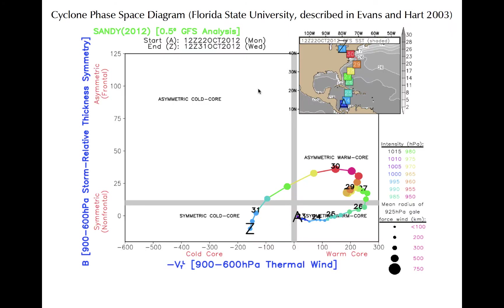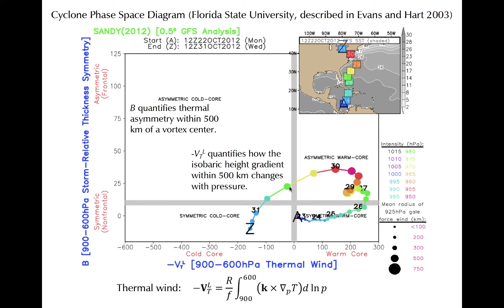Presence of a warm core is required for classification as a tropical cyclone. Cyclone phase-space diagrams can help one quickly diagnose if a cyclone is fully tropical, classifying the vortex based on its symmetry and the strength of the warm core. This diagram shows the evolution of Hurricane Sandy in the cyclone phase-space, starting at A in the Caribbean and progressing towards Z. The storm developed as a symmetric warm core cyclone over the Caribbean before losing its symmetry, partially due to shear, as it moved northward along the east coast of the U.S., eventually transitioning into a cold core non-tropical cyclone. The y-axis defines the thermal asymmetry near the cyclone center, while the strength of the warm core is defined by the negative magnitude of the thermal wind vector in the lower troposphere.